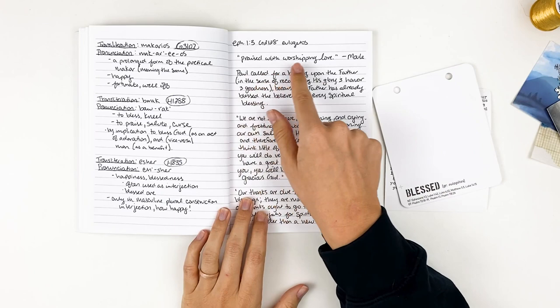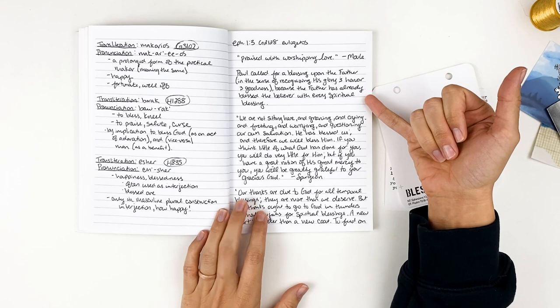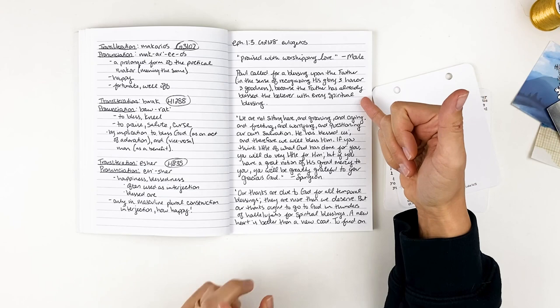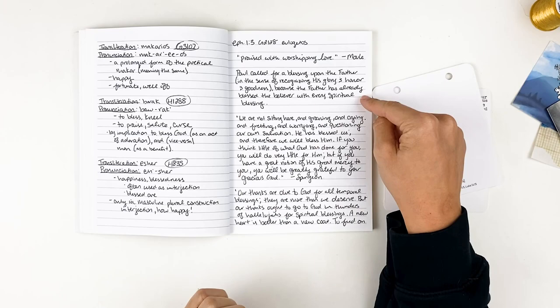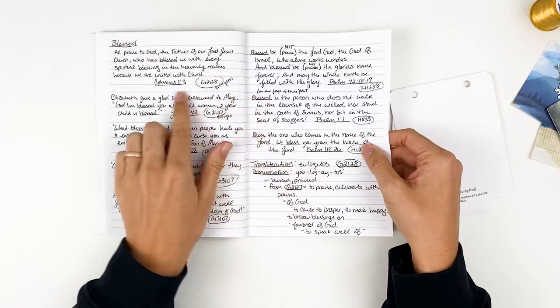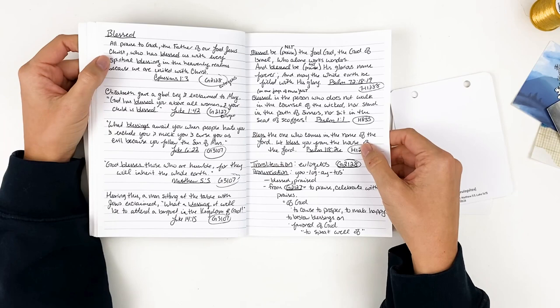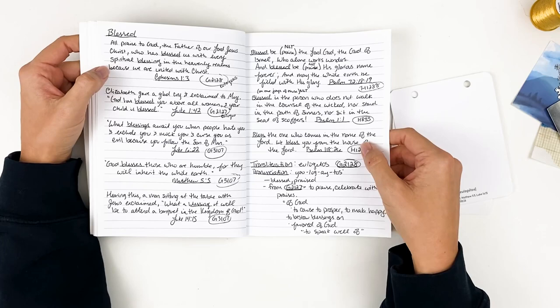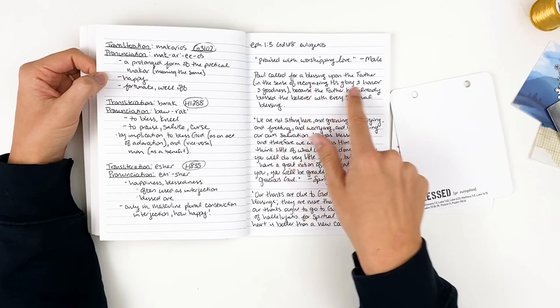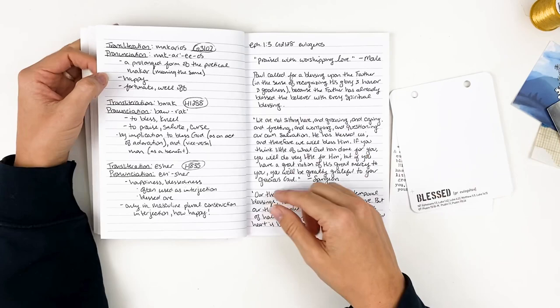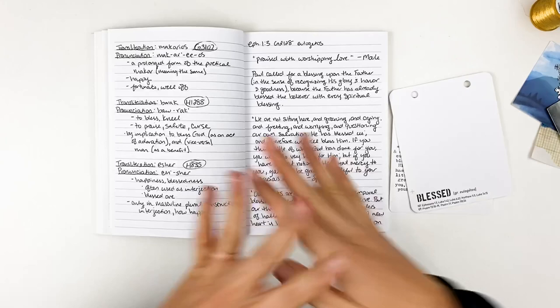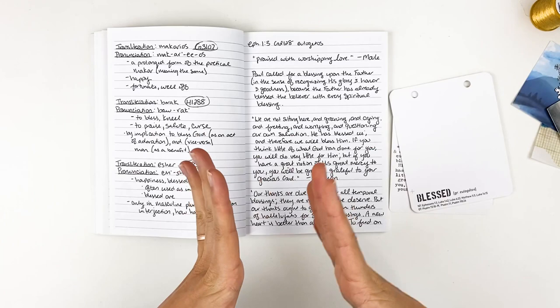Mole says, praised with worshiping love. And then this is from, I believe, David Guzik or Chuck Smith, probably. Paul called for a blessing upon the Father in the sense of recognizing his glory and honor and goodness because the Father has already blessed the believer with every spiritual blessing. Our response should be praise and adoration for the Father, right? Because of every spiritual blessing, salvation, the ability to spend eternity with him. That is the biggest blessing we can possibly have.